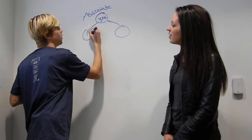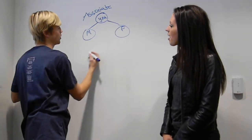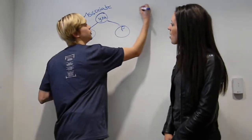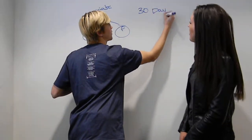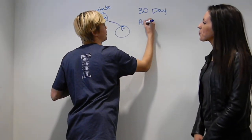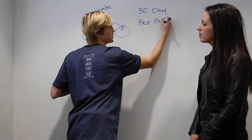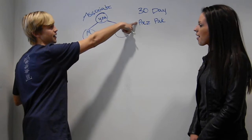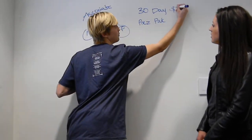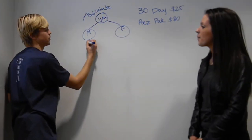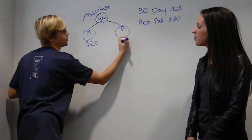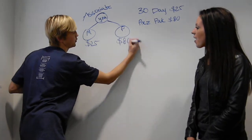When you refer two people, this is you plus two. Let's say your mom and your friend. You enroll your mom on a 30-day and your friend who wants to build a business on the President's Pack. So you have those two main packs. A 30-day is a $25 bonus and a President's Pack is an $80 bonus.